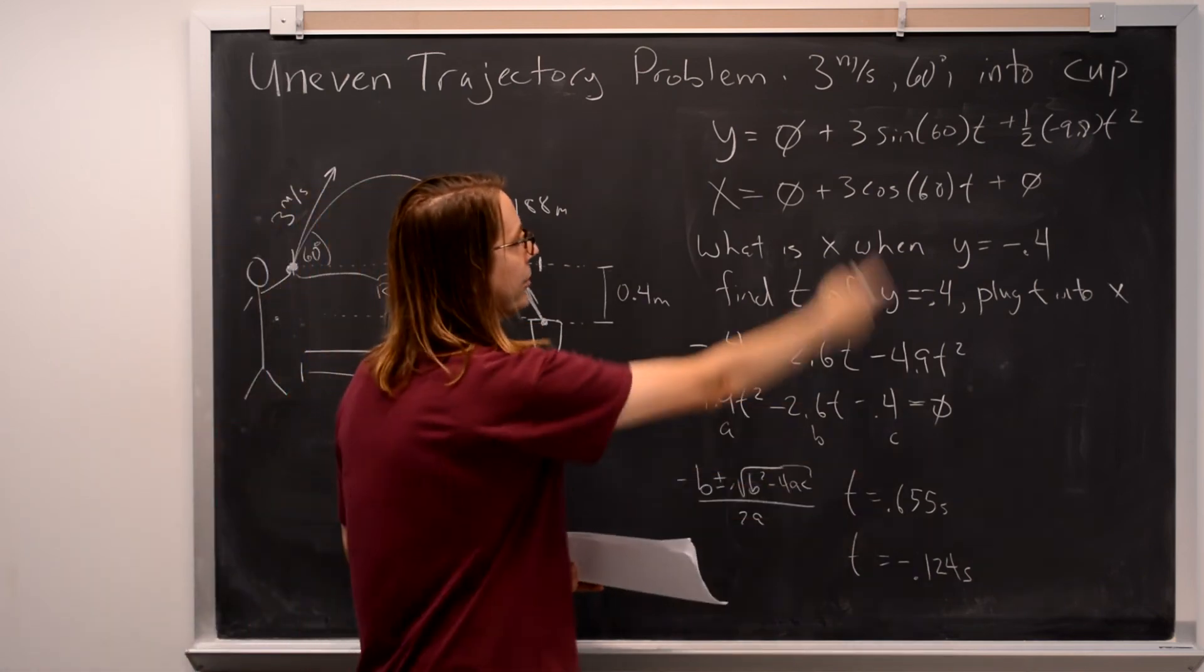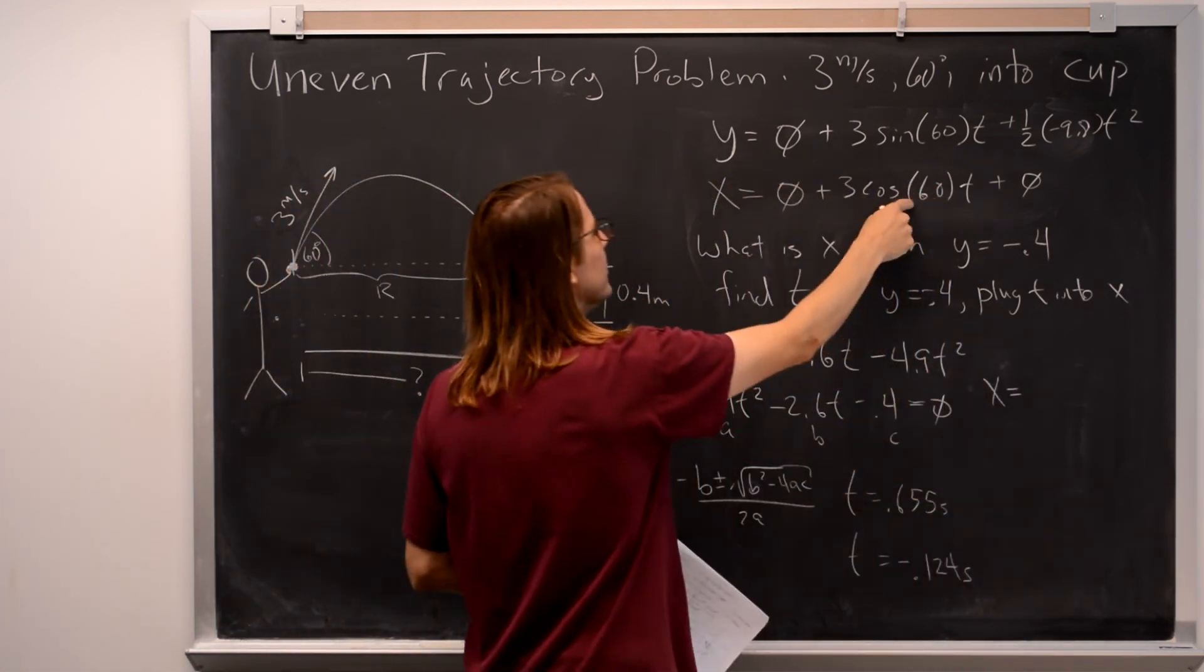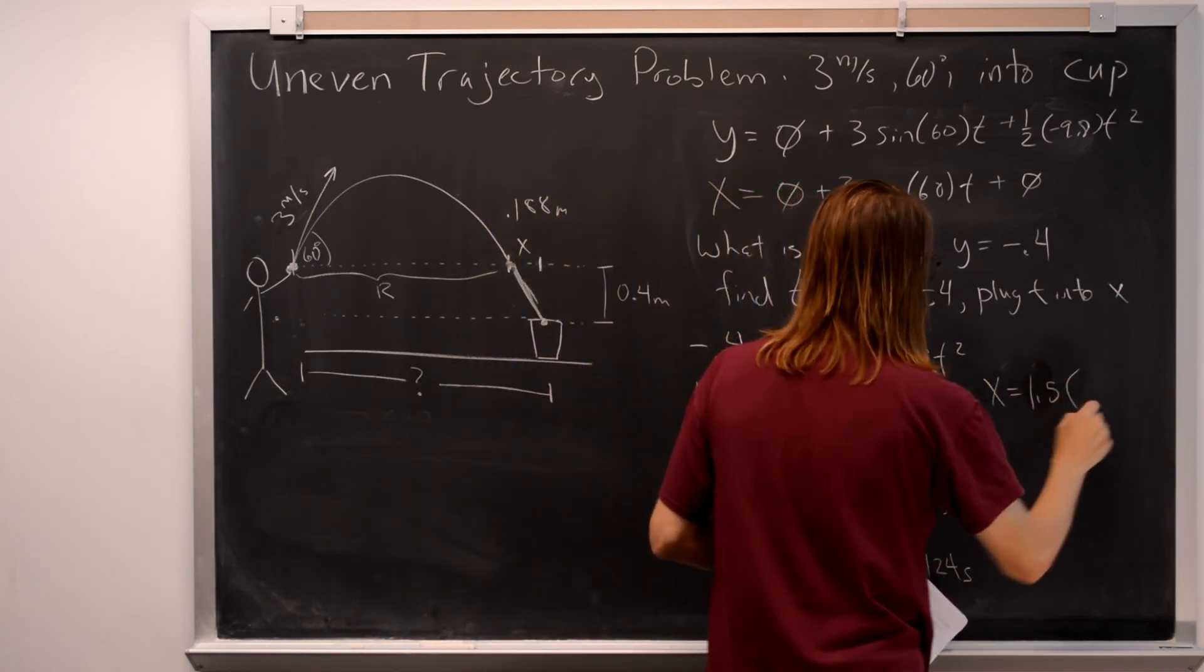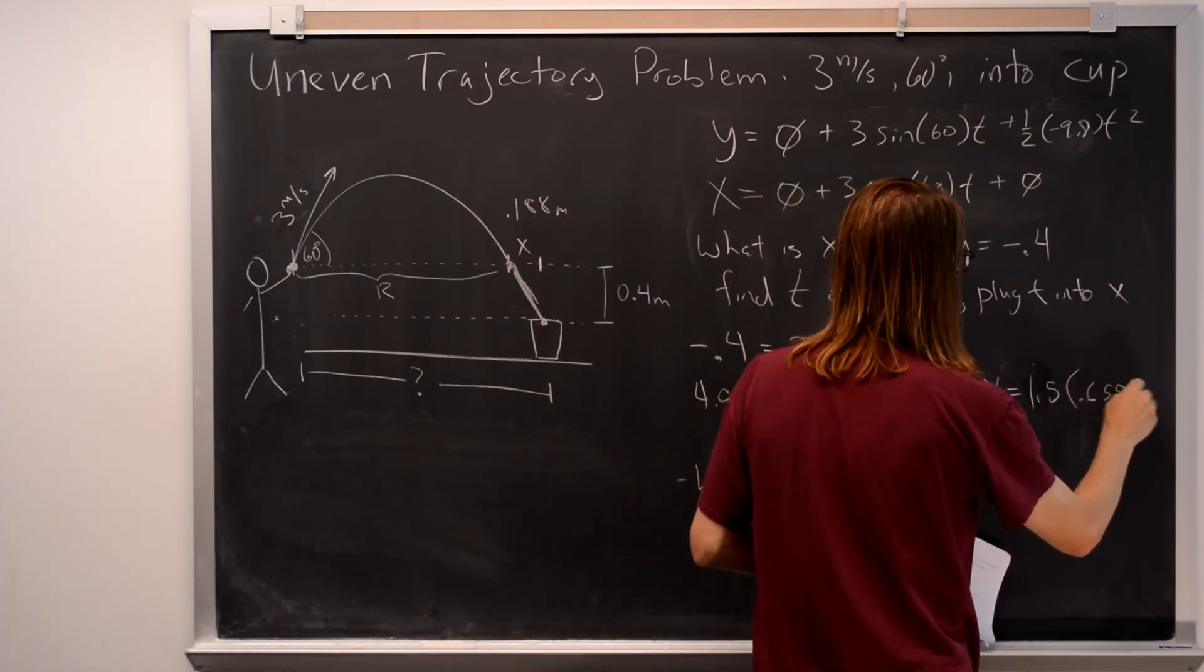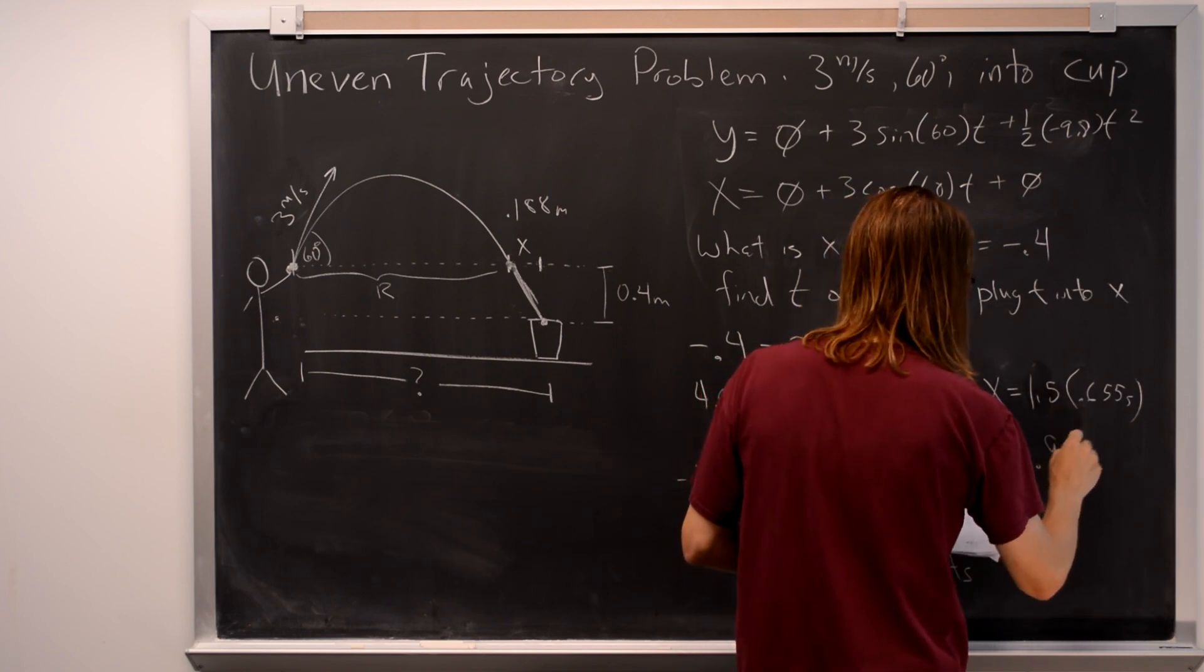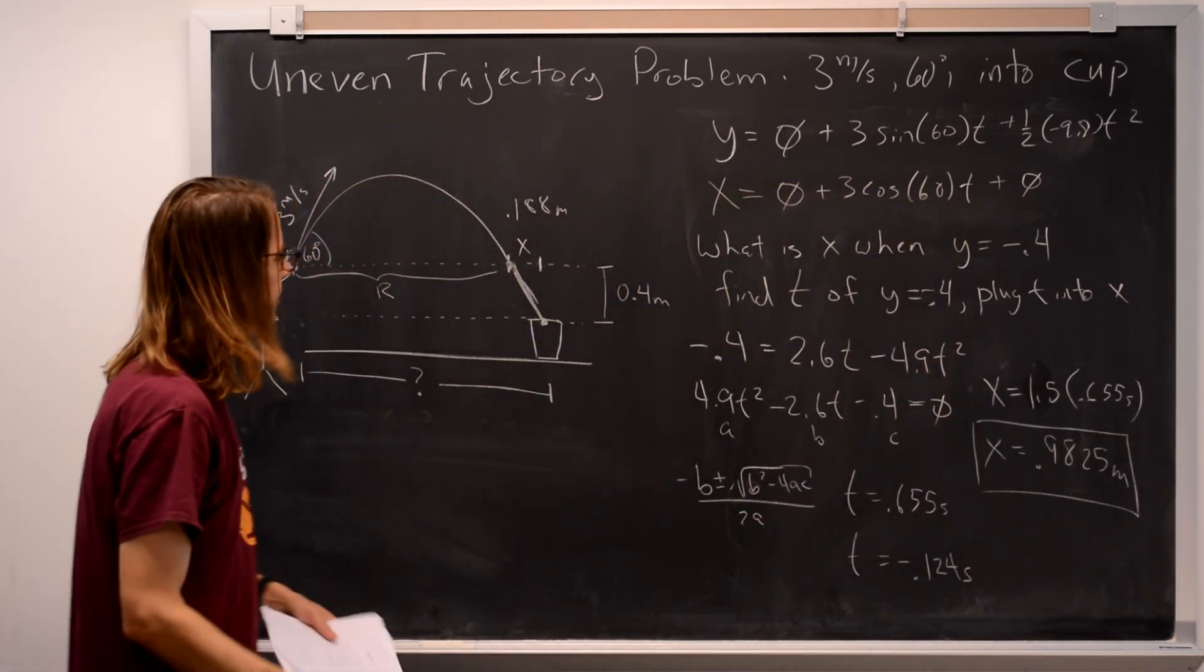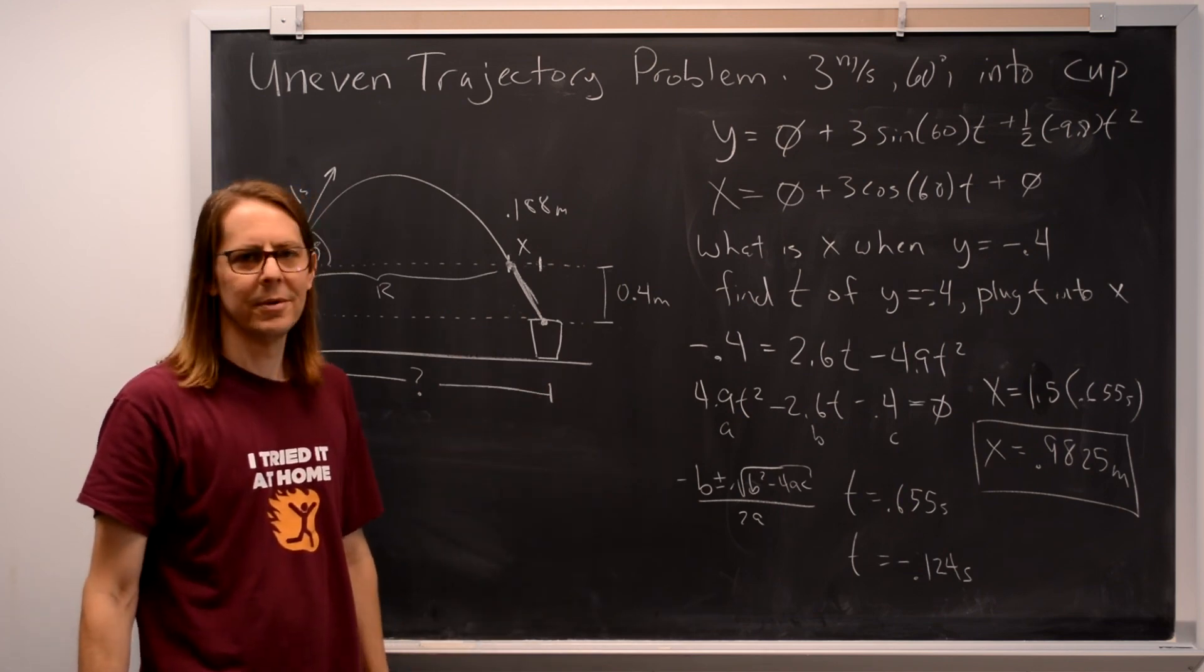So, all we've got to do is plug that into this. That's it. So, now we say x equals cosine of 60 is a half. So, that's 3. That's 1.5. 1.5 times 0.655 meters per second times seconds. And you get 0.9825 meters, which is the answer. Just like 0.983 before. We just calculated it in two straightforward steps. So, yes, you can do it that way.